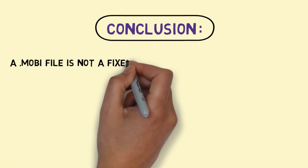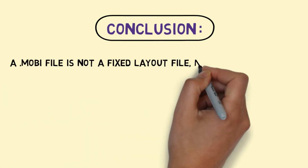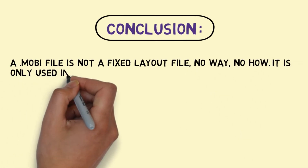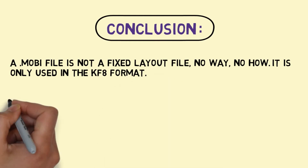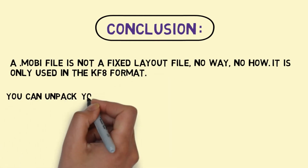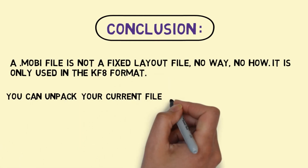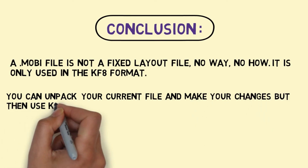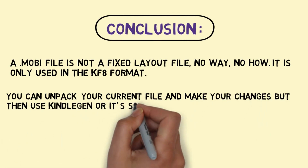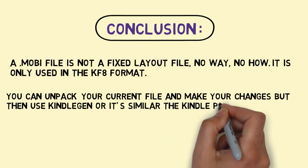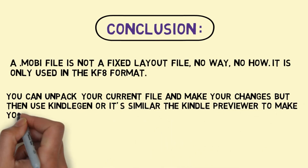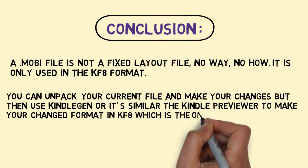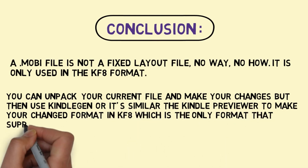Conclusion. A Mobi file is not a fixed layout file — no way, no how. It is only used in the KF8 format. You can unpack your current file and make your changes, but then use Kindle Generator or the Kindle Previewer to make your changed format in KF8, which is the only format that supports fixed layout.